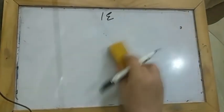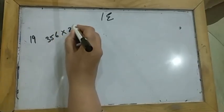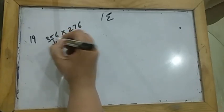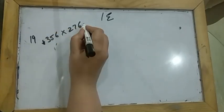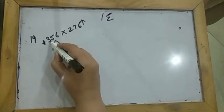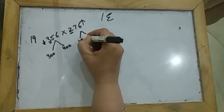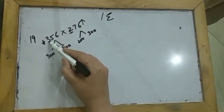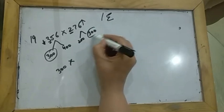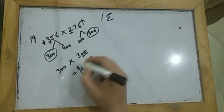Now I come to the 19th question, which is the reverse of the previous questions. Here you have to estimate the following products by rounding the first number downward and the second number upward. For example, 356 lies between 300 and 400, and 276 lies between 200 and 300. Rounding the first number downward gives 300, and rounding the second upward also gives 300. When you multiply, the four zeros go in and 3 threes are 9, so the answer is 90,000.